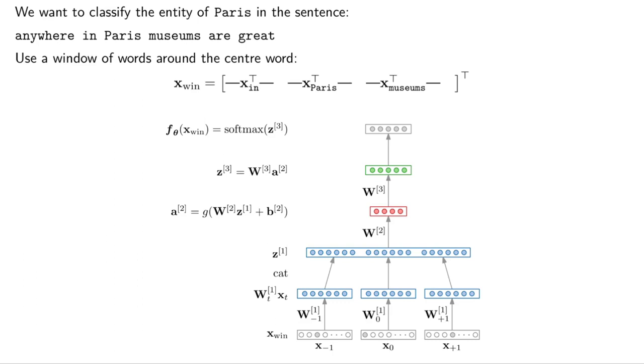Let's say we've got the sentence 'anywhere in Paris museums are great' and we want to know what the entity type of Paris is here in the middle. One approach if you want to use a feed-forward neural network is to say that we're going to use a window of words around the center word. The center word is Paris in this case, and this is the word that we want to classify.